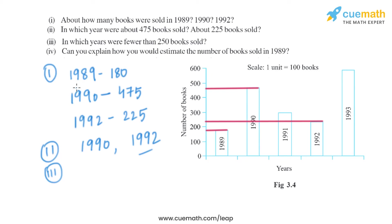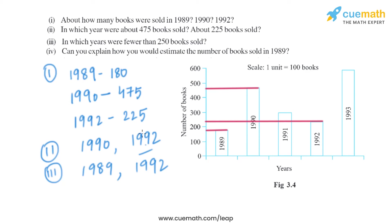Question 3 asks in which years were fewer than 250 books sold. Looking at the graph, in 1989 around 180 books were sold and in 1992 around 225 books were sold. So these are the two years in which fewer than 250 books were sold.